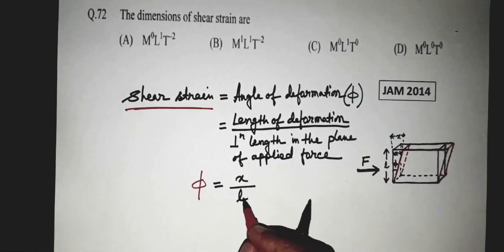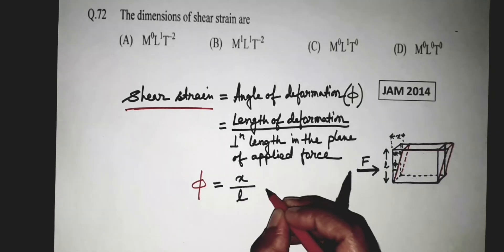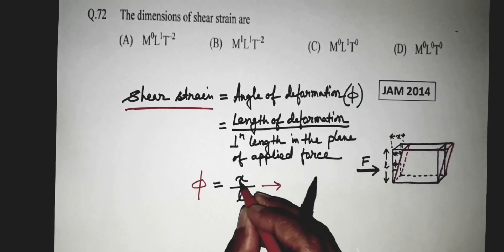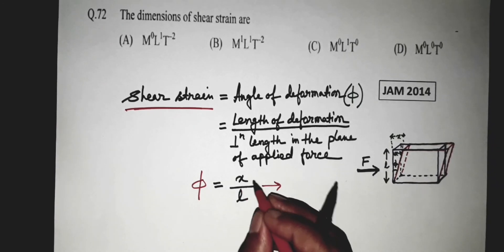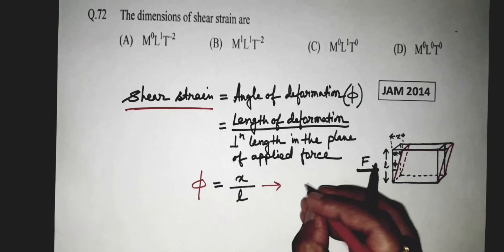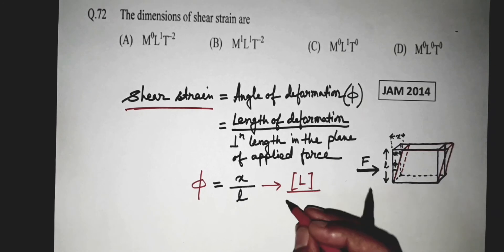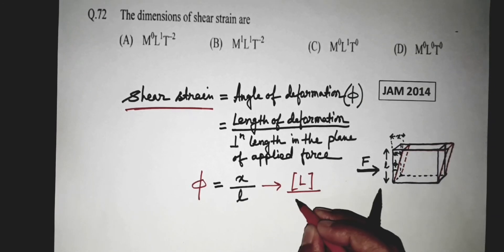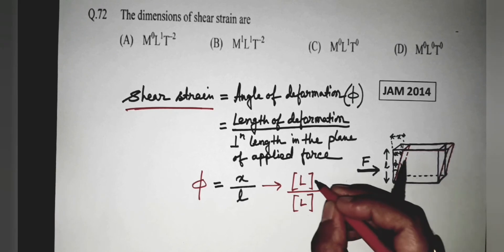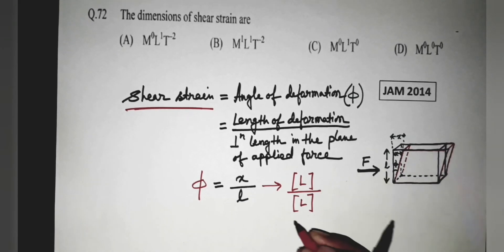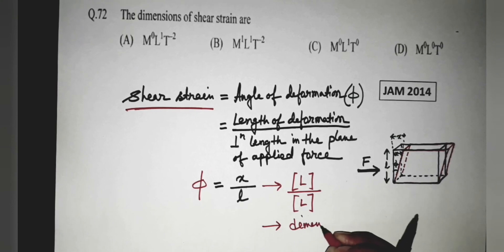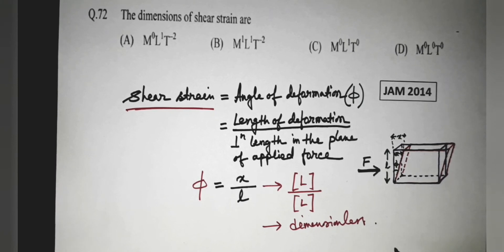So if you write the dimension of X and L, you get the dimension of X is simply the dimension of length, that is L. And dimension of L is again dimension of length, that is again L. And these two cancel out and we get phi or shear strain as dimensionless.